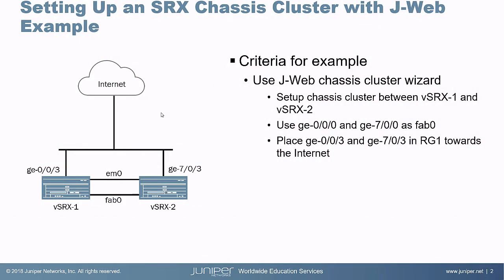Here is our example topology. We have VSRX1 and VSRX2, which are connected together through the EM0 interface and also the Fab0 interface. We'll set all that up once we get into J-Web. We also have Gigi003 and Gigi703 — the Gigi703 naming happens after the cluster is formed — which we want to put into a redundancy group that connects to the internet.